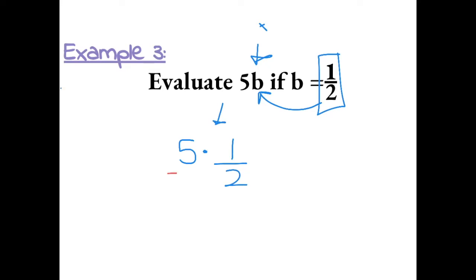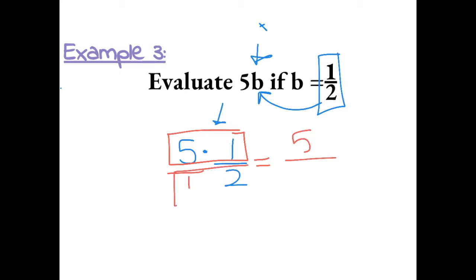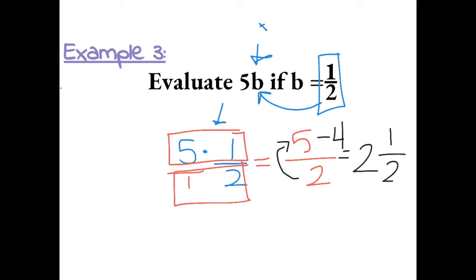5 times 1 half — I can put a 1 underneath my whole number 5. Now, when multiplying fractions, we multiply numerator times numerator and denominator times denominator. Because this is an improper fraction, I want to convert it to a mixed number. So, 2 goes into 5 two whole times, which gives us 4, and we're left with 1. The denominator always stays the same, so this equals 2 and 1 half.